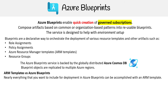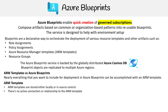The main question people are going to ask is: what's the difference between an ARM template and an Azure Blueprint? Because an ARM template can automate the setup of things. Well, basically, nearly everything you want to include for deployment in an Azure Blueprint can technically be accomplished in an ARM template. But the thing is, with an ARM template, you're storing it either locally or in source control, and there is no active connection or relationship to the ARM template.